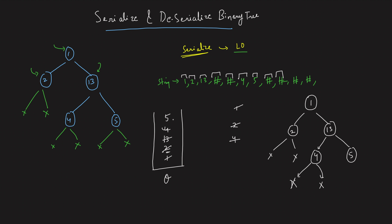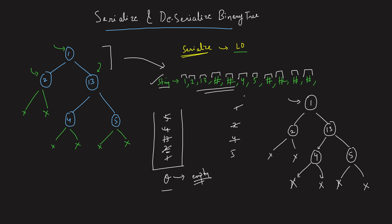Node 4 is done, node 5 is done. You have completed the traversal of the string and the queue is ultimately empty. Once you've created the entire tree, the root is what you return. Using this tree I created a string, and using that string I created back the binary tree — that's as simple as that. Just keep picking values from the string and attaching them to the left, right, left, right of whatever you're taking out of the queue.